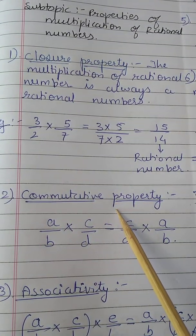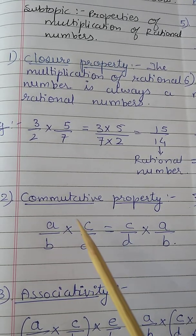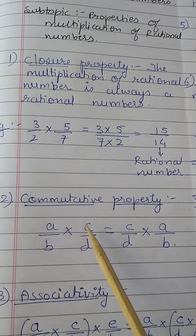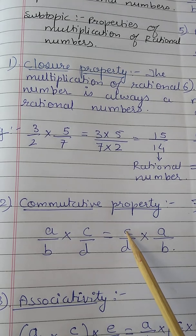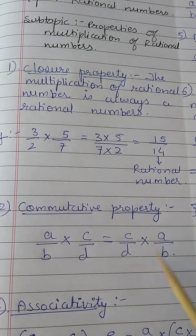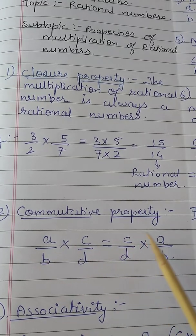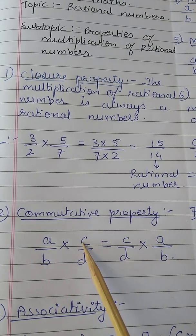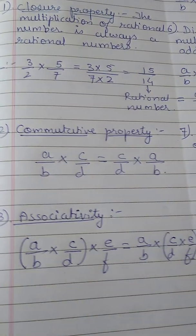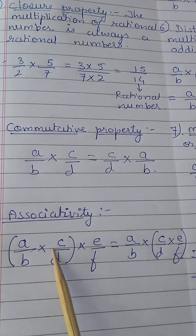In the commutative property, if a/b is multiplied by c/d — where a/b is written first and then c/d — the answer you get will be equal to the answer if you write c/d first multiplied by a/b. If you change the order of writing the rational numbers, the answer will be the same.